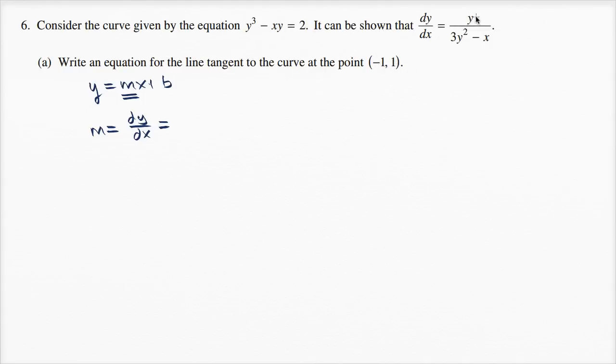That point sits on this curve. So y = 1, giving us 1/(3·1²), which is 3, minus x. When y = 1, x = -1.